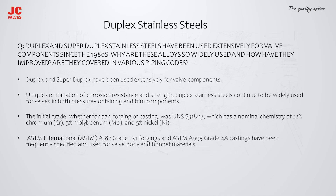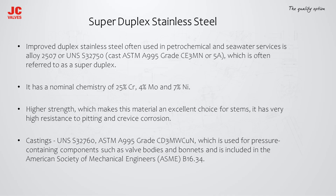ASTM A182 Grade F51 forgings and ASTM A995 Grade 4A castings have been frequently specified for valve body and bonnet materials. An improved duplex stainless steel often used in petrochemical and seawater services is Alloy 2507, or UNS S32750, cast ASTM A995 Grade CE3MN (5A), often referred to as super duplex. It has a nominal chemistry of 25% chromium, 4% molybdenum, and 7% nickel. In addition to higher strength, this material has very high resistance to pitting and crevice corrosion.